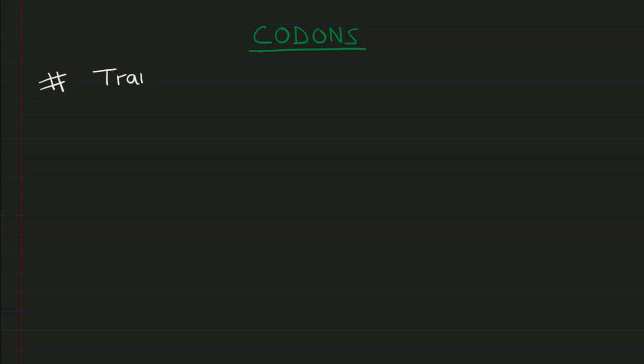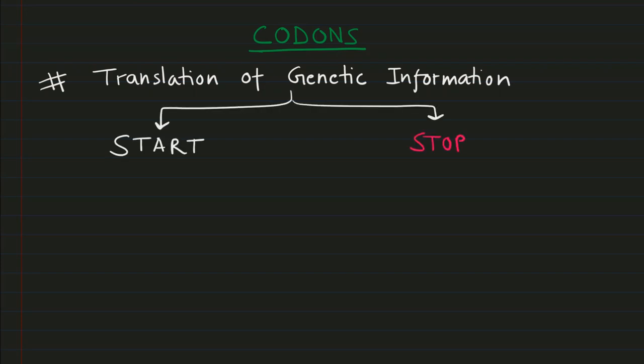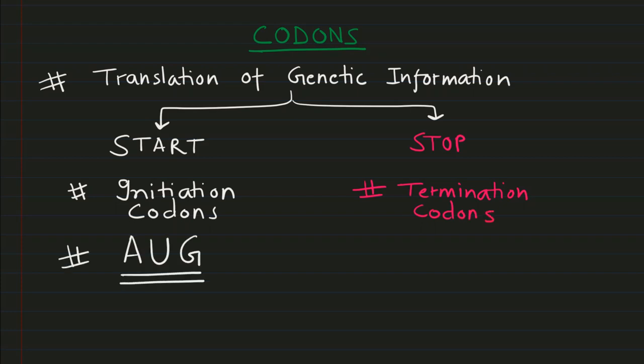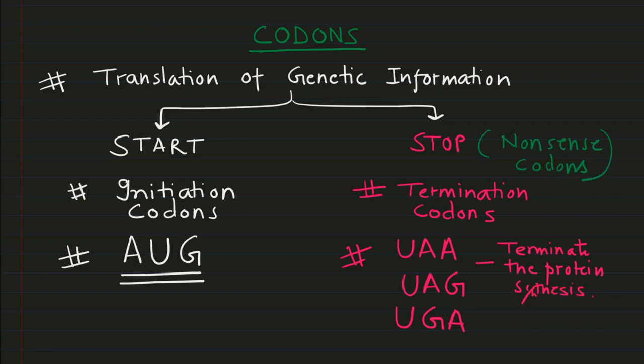Codons are used to translate genetic information. There is a start codon and stop codons. Start codon initiates translation, also known as initiation codon. Stop codons terminate translation, also known as termination codons. The example of start codon is AUG. Examples of stop codons are UAA, UAG, and UGA. They all terminate protein synthesis and are also known as nonsense codons.